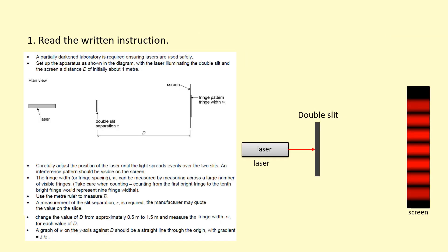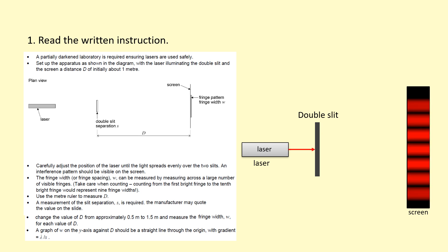Here are the written instructions for the double slit experiment. You're going to first choose a laser — you might use a different colour, but I'll use a red one here. You need to note down the wavelength written on the laser and write down the slit separation of your double slit. Then in this practical you're going to be changing the distance to the screen and measuring the width of the fringes for each distance you use.